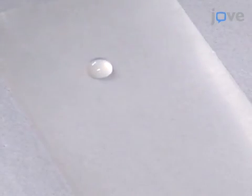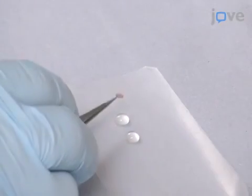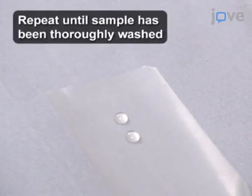Next, place 50 microliter drops of ultra-pure water or an appropriate volatile buffer solution on a sheet of laboratory foam. Gently touch the carbon surface of the grid to the drop and lift off a small droplet onto the surface of the grid.